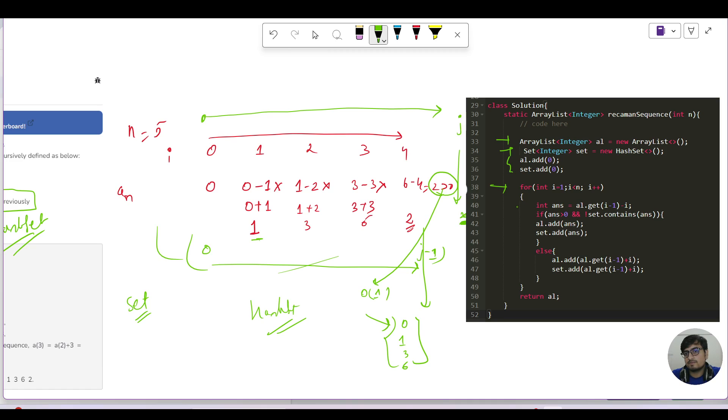Which will go from i equals 1 to less than n. Now I'm forming my current answer, which is nothing but al.get(i-1) minus i, which is set by the question. Now check: current answer is greater than 0 and you haven't seen it previously.